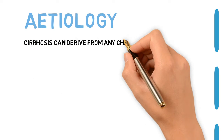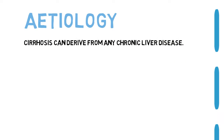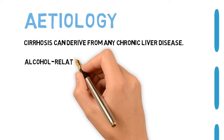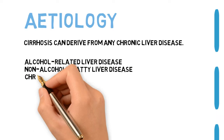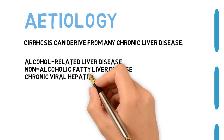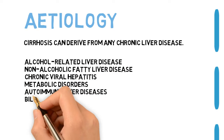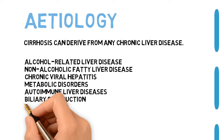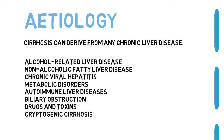Etiology. Cirrhosis can derive from any chronic liver disease. The most common causes in the Western world are alcohol-related liver disease, non-alcoholic fatty liver disease, chronic viral hepatitis, metabolic disorders, autoimmune liver diseases, biliary obstruction, drugs and toxins, and cryptogenic cirrhosis.